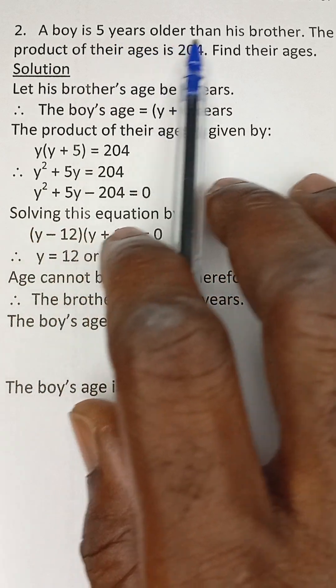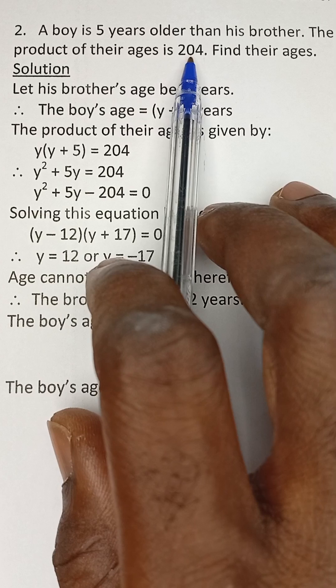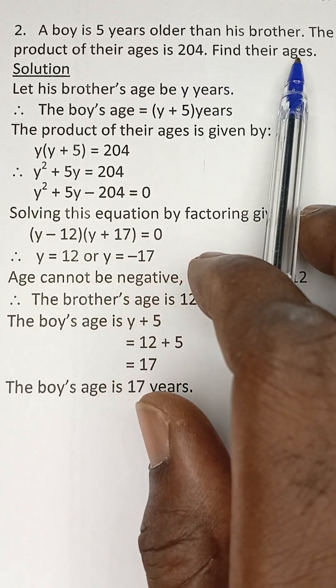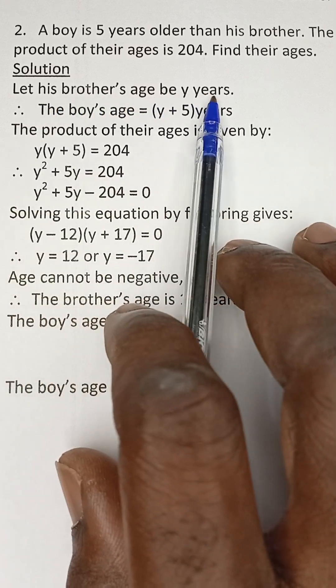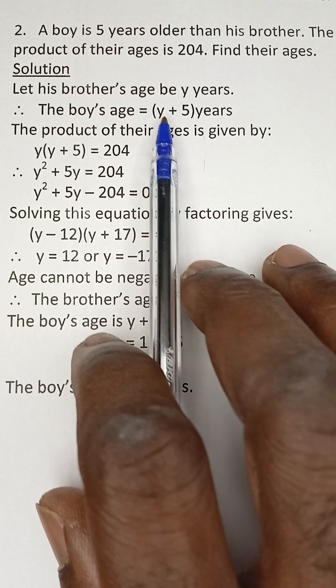A boy is five years older than his brother. The product of their ages is 204. Find their ages now. Let's take the brother's age to be y years, and from there the boy's age will be y plus five.